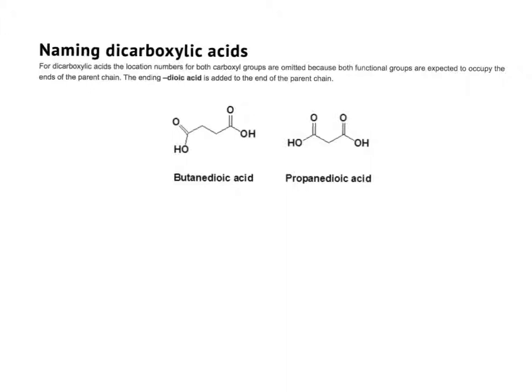Occasionally one may encounter a dicarboxylic acid, where the carboxyl group is located on each end of the structural formula. We still count the longest chain — one, two, three, four — giving butanoic acid, but because we have two carboxyl groups we add the prefix di, calling this butanedioic acid. In another example, counting one, two, three gives propanoic acid, and again with two carboxyl groups we add di, calling that propanedioic acid.